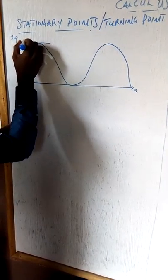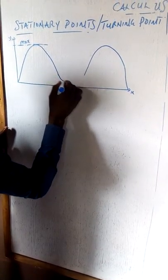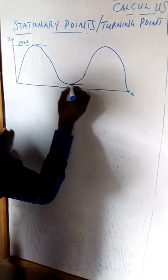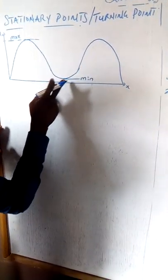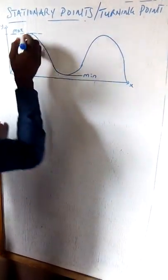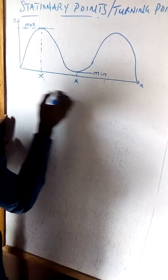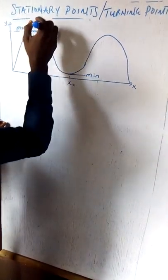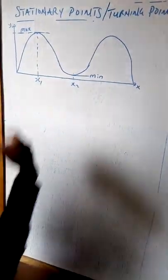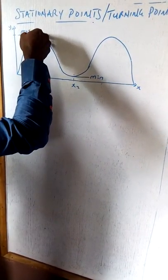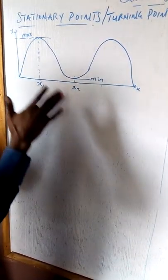The uppermost point of y is the maximum point — the highest value of y. Below that, at the lowest dip of the curve, we experience the minimum point — the least value of y. At the point where we have the maximum, there is a corresponding x value x1; where we have the minimum, there is a corresponding x2. These are the stationary points — the points at which maximum or minimum values are experienced.